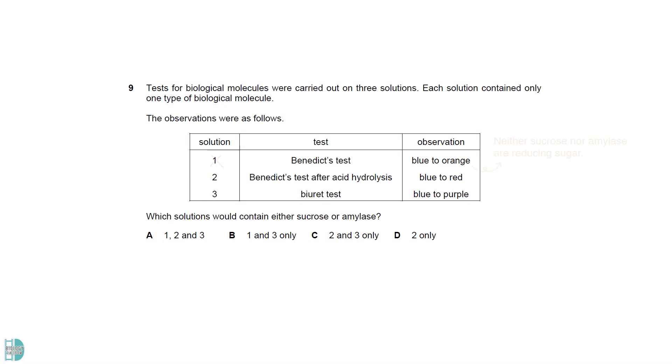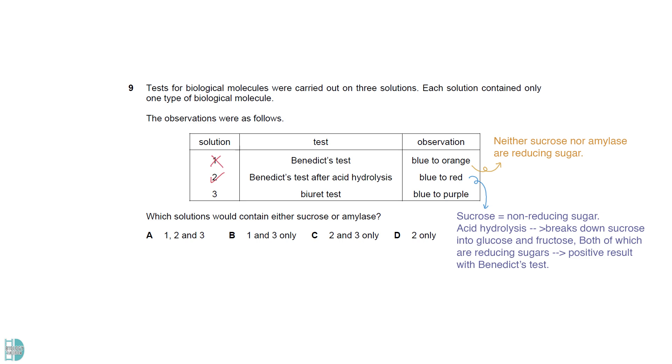D-glucose is a non-reducing sugar. So, one is incorrect. Sucrose is a non-reducing sugar. Acid hydrolysis breaks down sucrose into glucose and fructose, both of which are reducing sugars. You will get a positive result with Benedict's test after this. Amylase is an enzyme. All enzymes are globular proteins. So, Biuret's test will give a positive result.